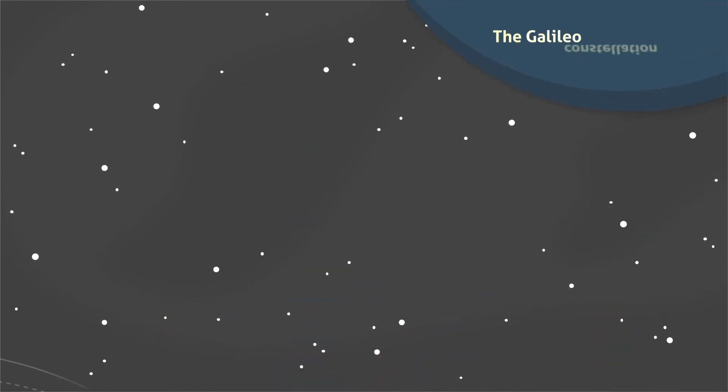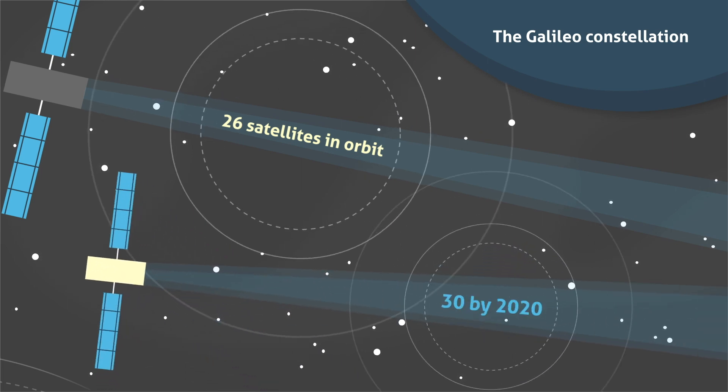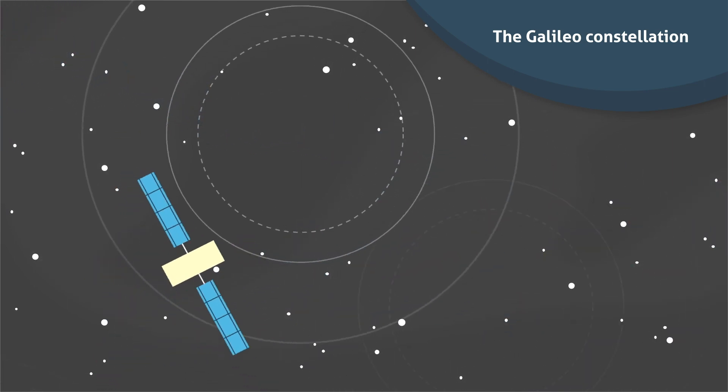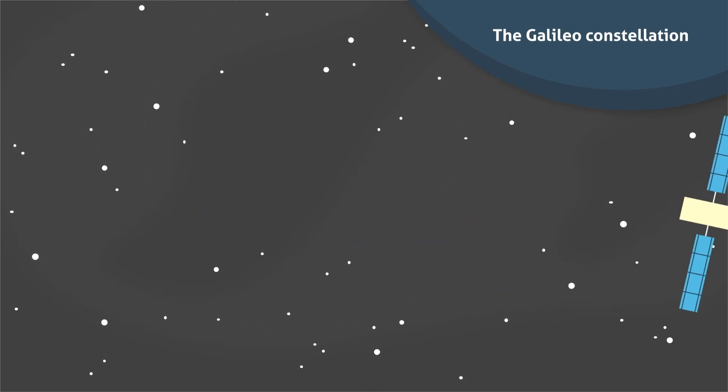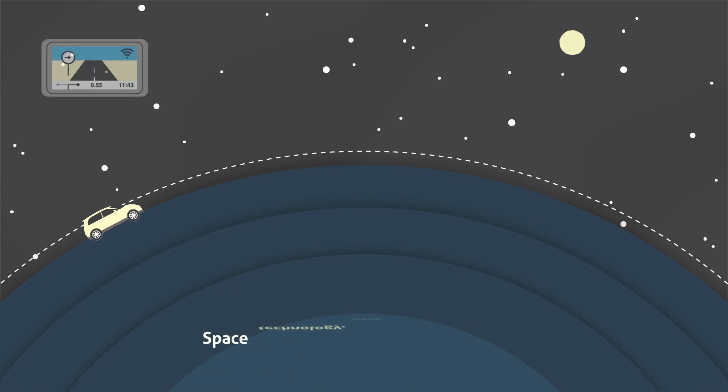The Galileo Constellation, for example, with 26 satellites already in orbit and 30 by 2020, when in full operational capability, will be the most precise satellite navigation system in the world.